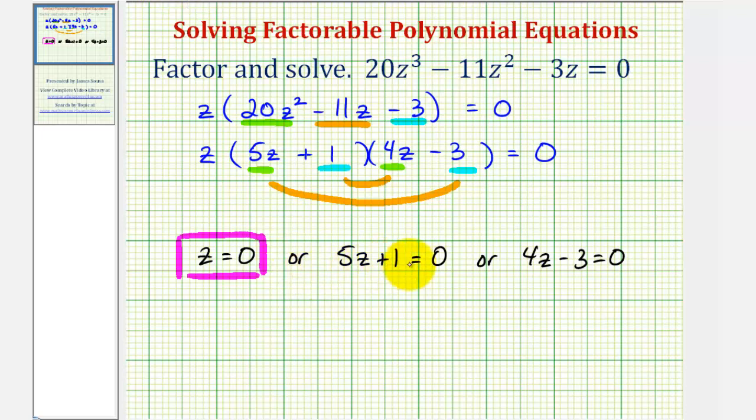To solve 5z plus 1 equals zero, we would subtract 1 on both sides and then divide by 5. We divide by 5, notice how z is equal to negative 1 fifth, which is our second solution.